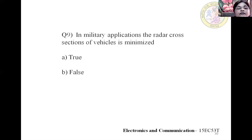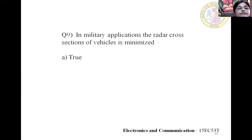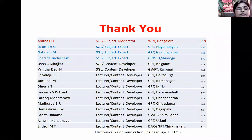Question 9: In military applications, the radar cross-section of vehicles is minimized — true or false? The answer is true, because in military applications the radar cross-section of vehicles is minimized to reduce detectability. With this I have completed my lecture. Thank you to my whole team.